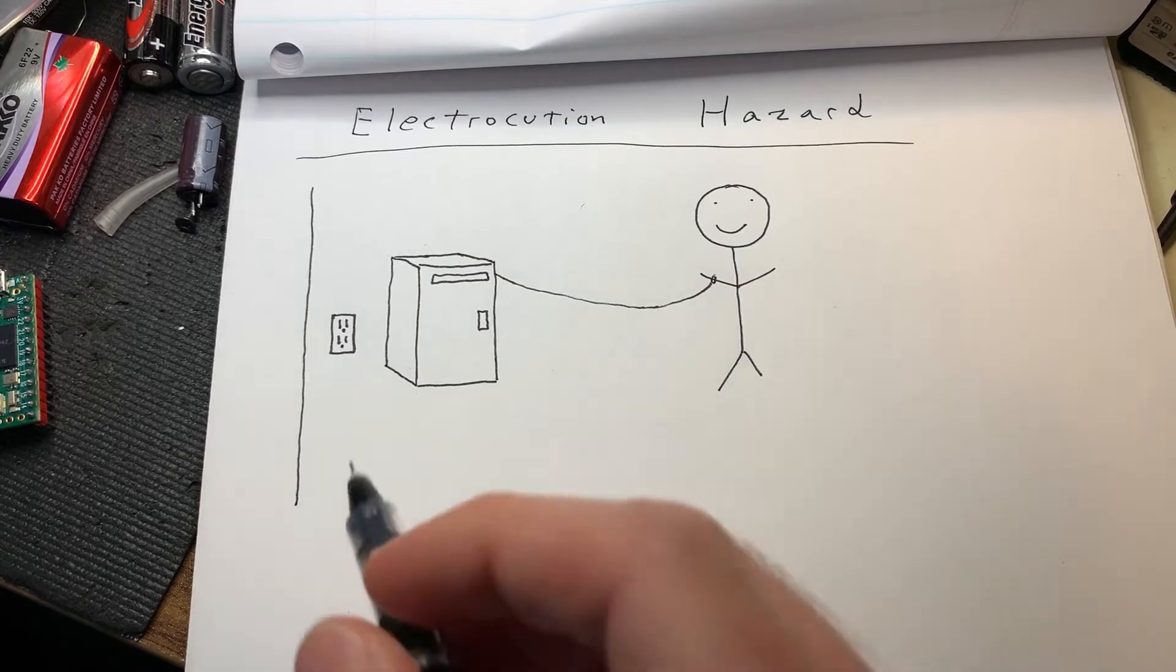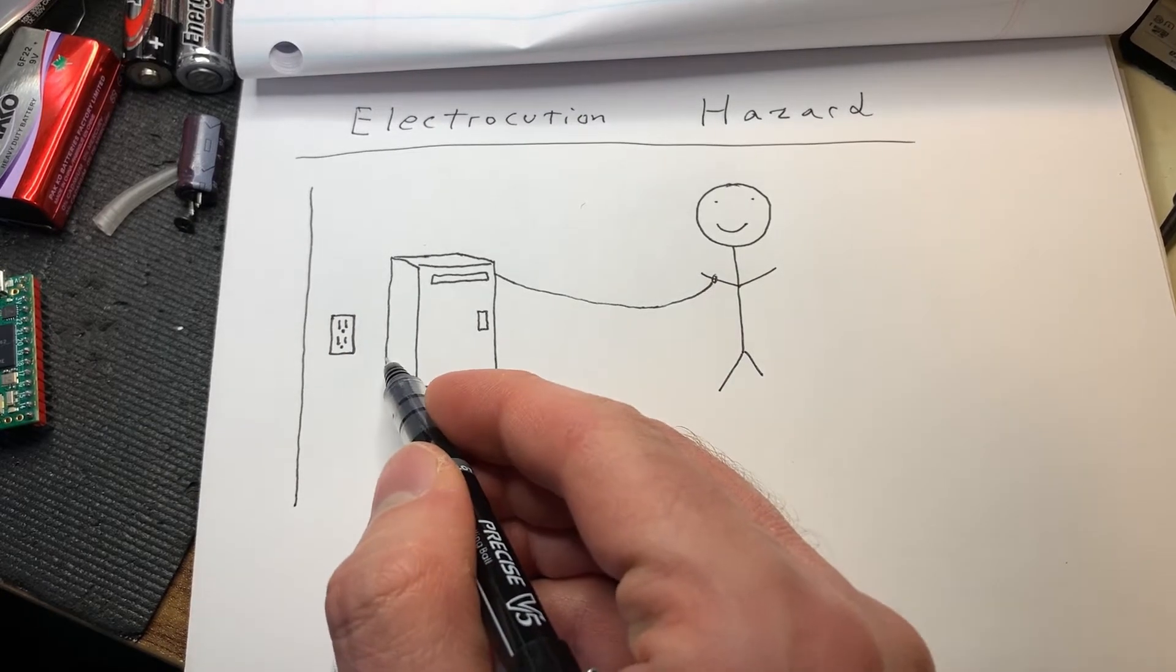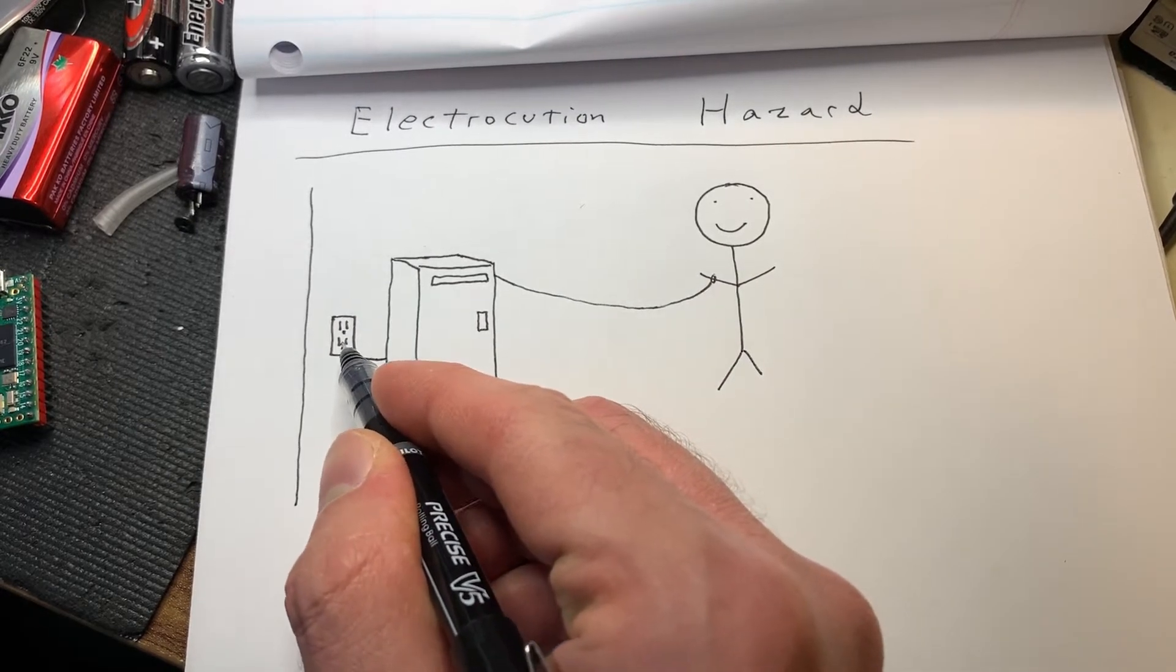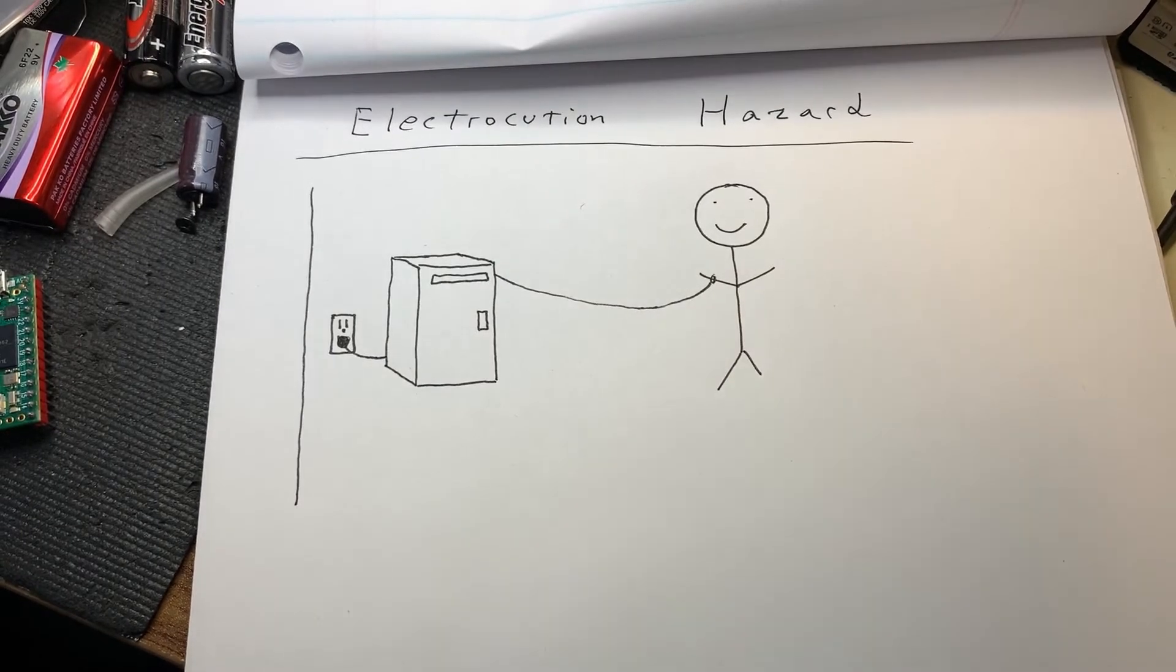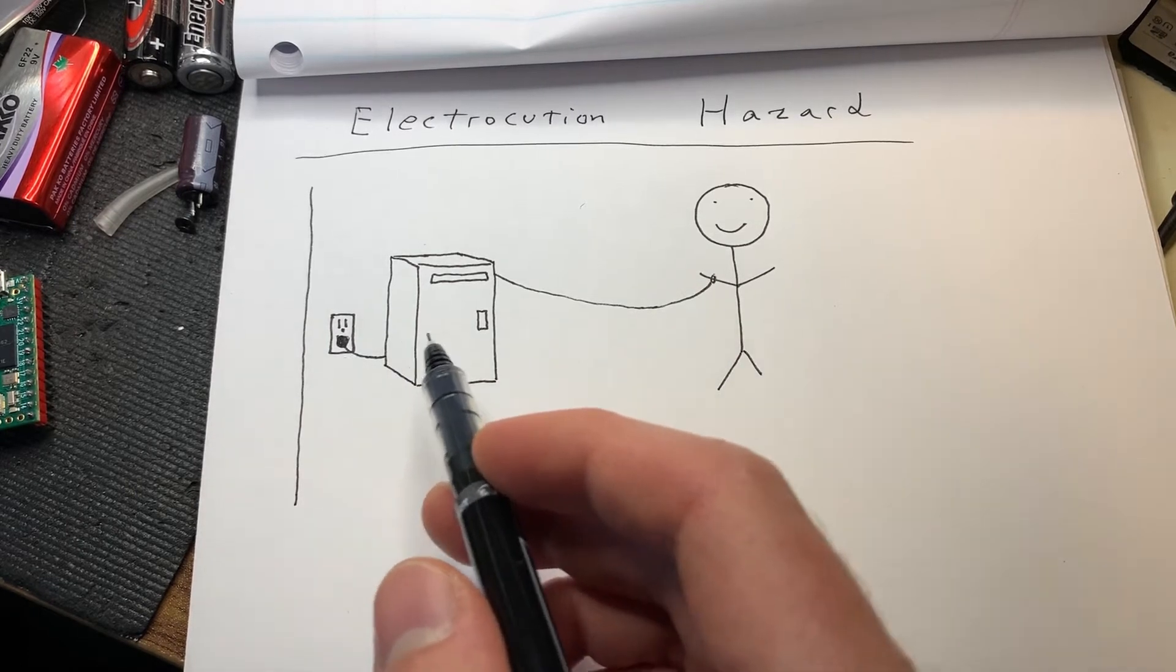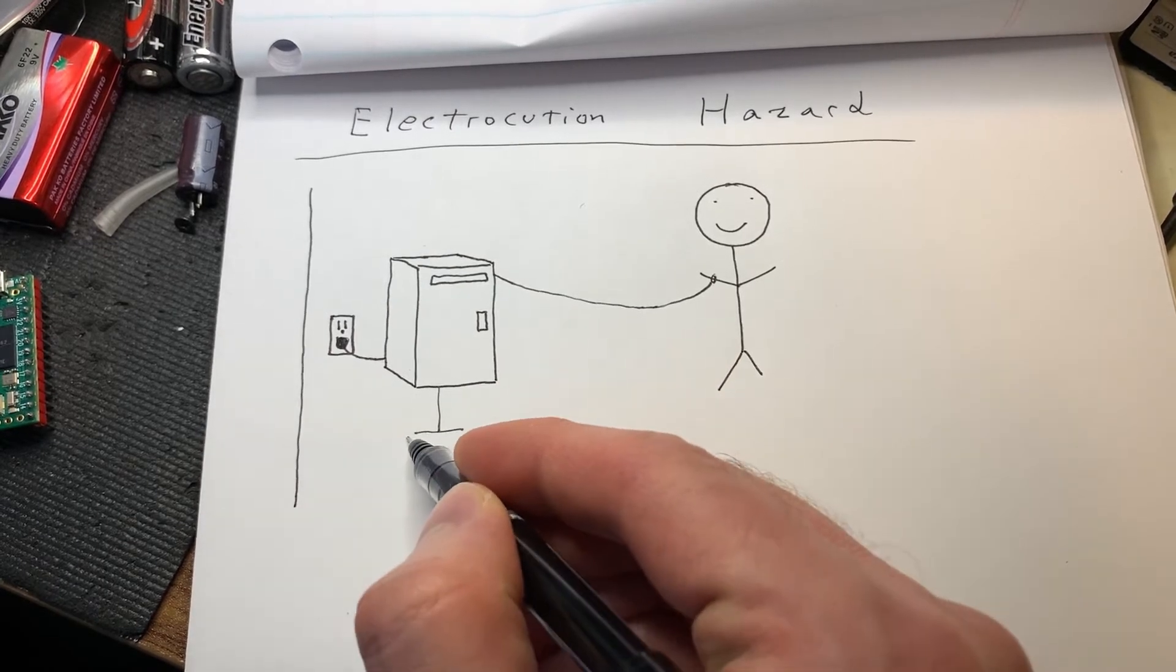But there are some circumstances where it's actually beneficial to leave the machine plugged in while you're working on it. This is typically done if you have multiple devices you're working on at the same time, but in this case what you've done is you're taking this computer and you're earth referencing it through the outlet.